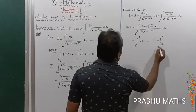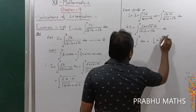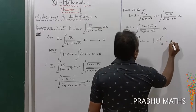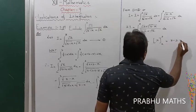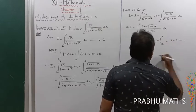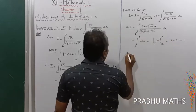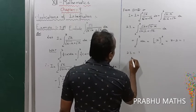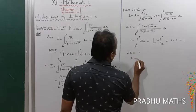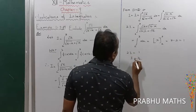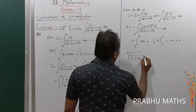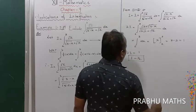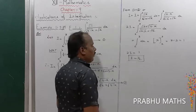Evaluating: 2I equals [x] from 2 to 3, which is 3 minus 2 equals 1. Therefore 2I equals 1, so I equals 1/2. We get the solution I equals 1/2.